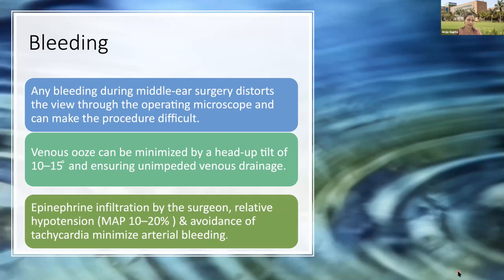Any bleeding during middle ear surgery distorts the surgical view under the operating microscope, increases procedural difficulty, and further increases operative time. Venous ooze can be minimized by head-up tilt of 10–15 degrees, which ensures unimpeded venous drainage. Epinephrine infiltration by the surgeon, relative hypotension, and avoidance of tachycardia minimize arterial bleeding. Intraoperatively, facial nerve monitoring is an important concern — the facial nerve runs through the middle ear in close relation to the ossicles and is vulnerable to damage during middle ear surgery. Surgeons use facial nerve monitoring to preserve this nerve.